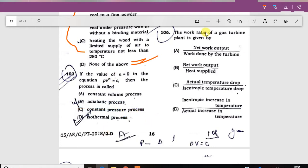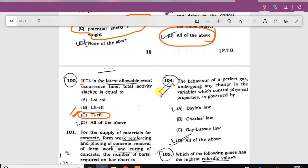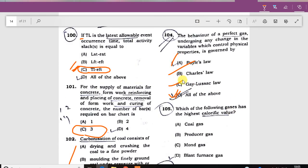The behavior of a perfect gas undergoing any change in the variable which controls physical property is governed by Boyle's law, Charles law, and Galusmanic law. All of the above.